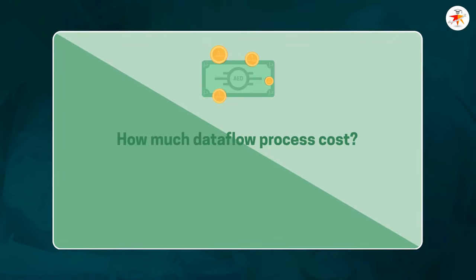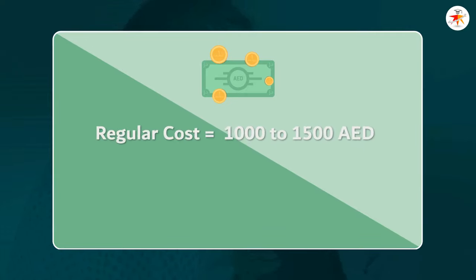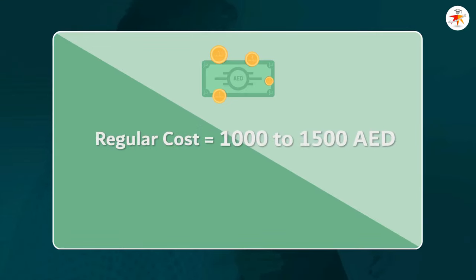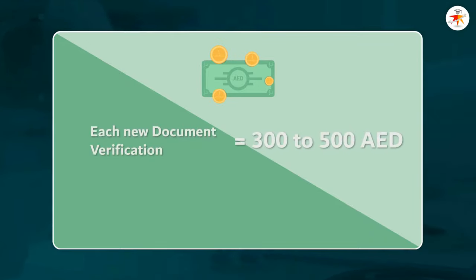The time may vary depending on the number of documents you need to verify. Regular data flow service cost may range from 1,000 to 1,500 UAE dirham, depending on the healthcare category you are applying for. This cost may increase if you need to add more documents; any additional verification may cost approximately 300 to 500 UAE dirham each.